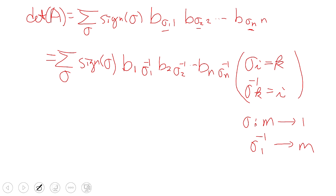Now we have the product b_{1,something} × b_{2,something} × ... × b_{n,something}, which is very close to the determinant of A transpose. The only remaining piece is the sign. The permutation is now sigma^{-1}, and we need to confirm that the sign of sigma equals the sign of sigma^{-1}.